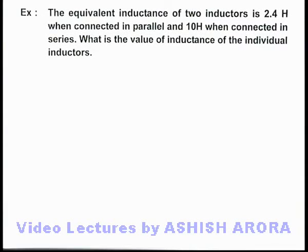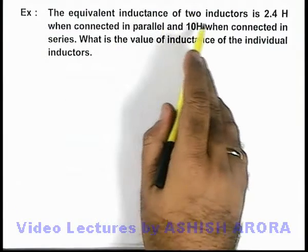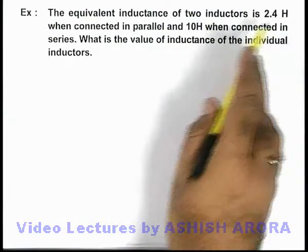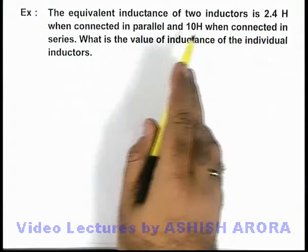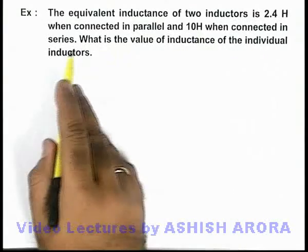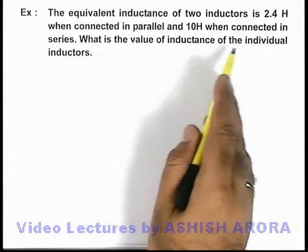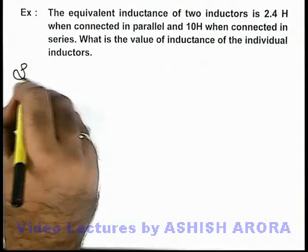In this example, we are given that the equivalent inductance of two inductors is 2.4 henry when connected in parallel, and 10 henry when connected in series. We are required to find the value of inductance of the individual inductors.